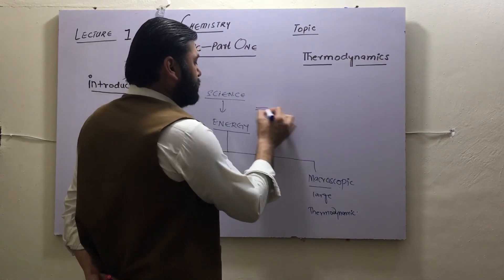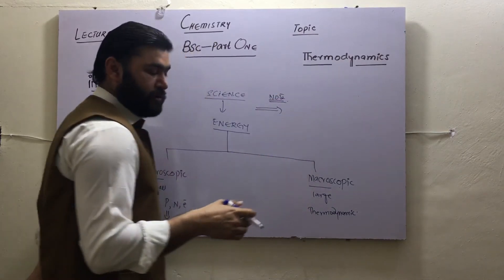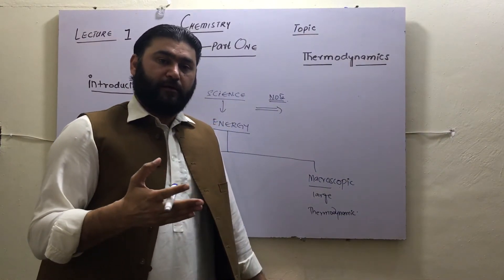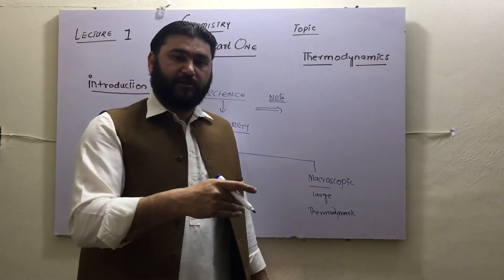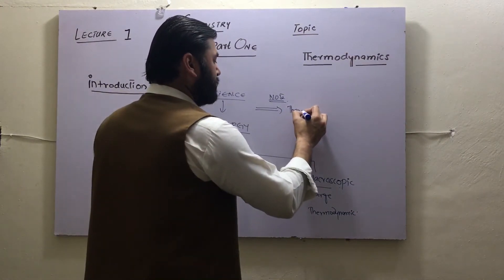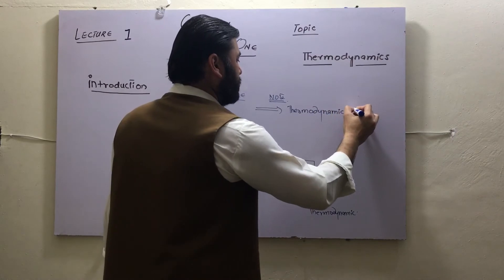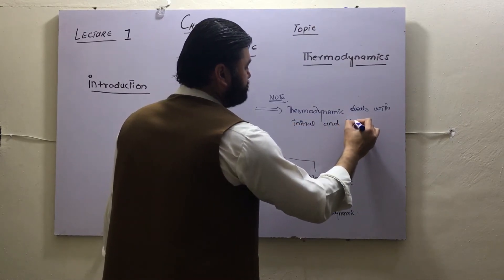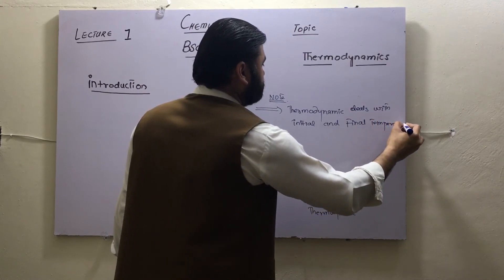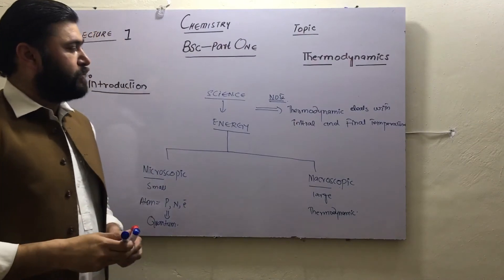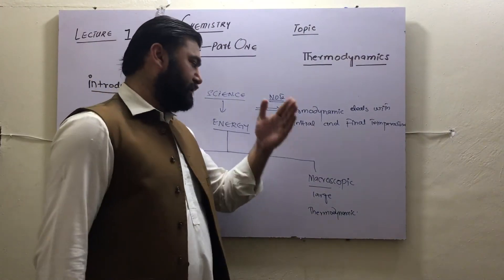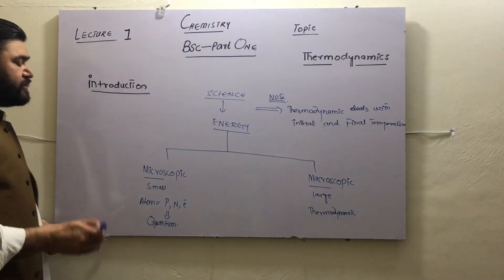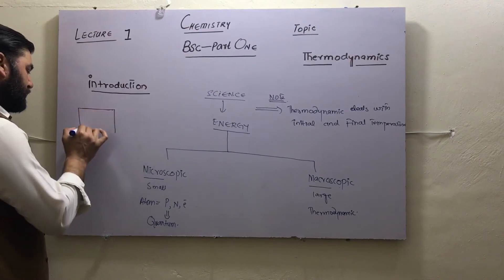One important thing: thermodynamics does not deal with whether it is an SN1 or SN2 reaction. It does not deal with chemical kinetics or the path of a reaction. It only tells us the initial and final temperature — what was the temperature of the reactants and what is the temperature of the products. Thermodynamics deals with initial and final states only.